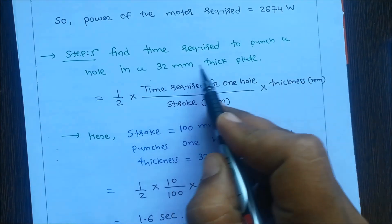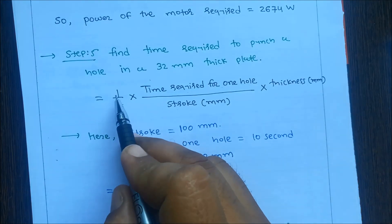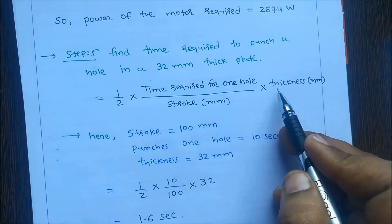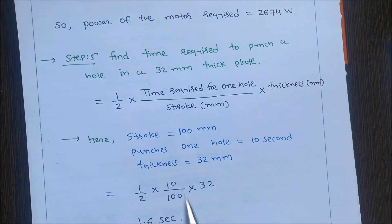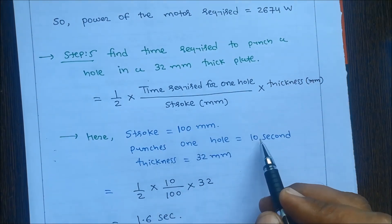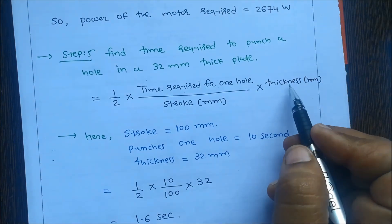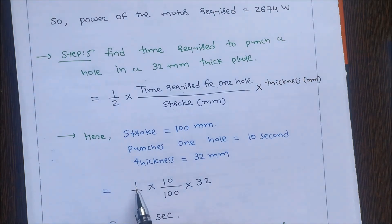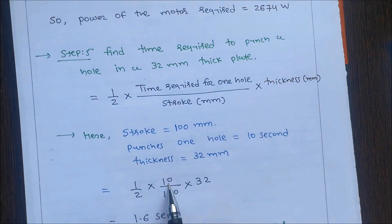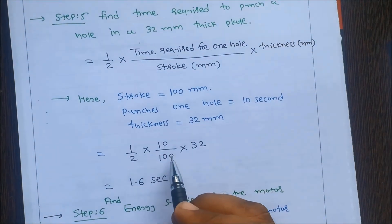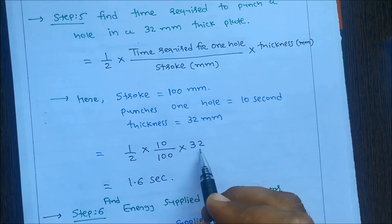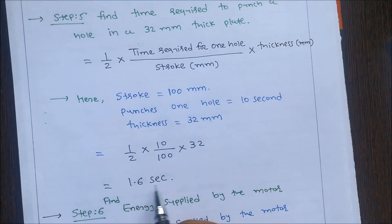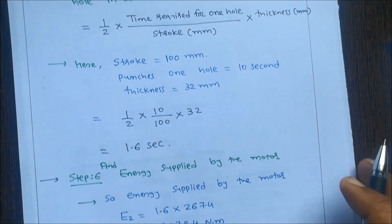Step 5: Find time required to punch a hole in a 32 mm thick plate. The equation is: time to punch = (1/2) × (time for one hole / stroke) × thickness = (1/2) × (10 / 100) × 32 = 1.6 seconds.